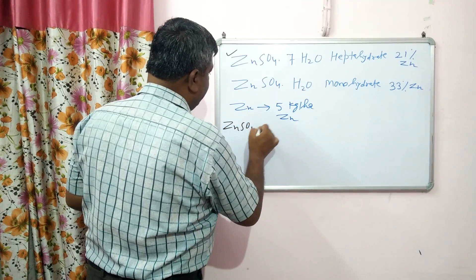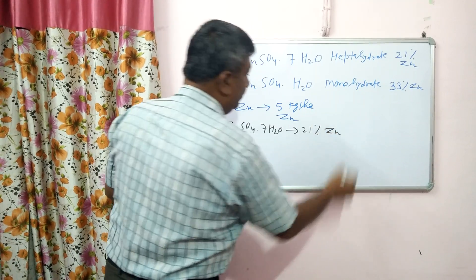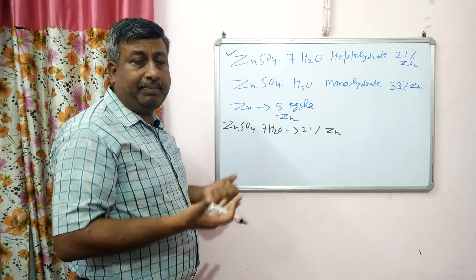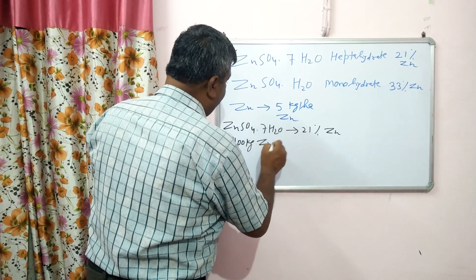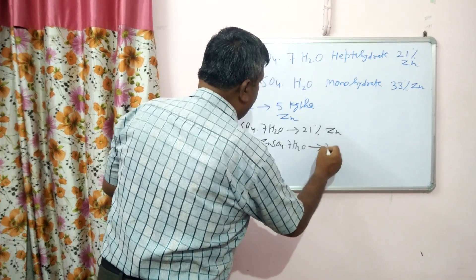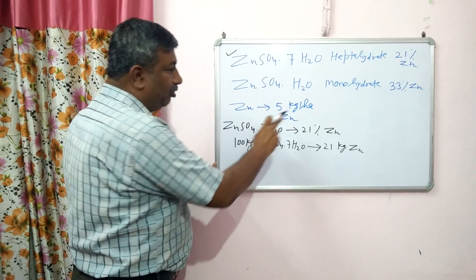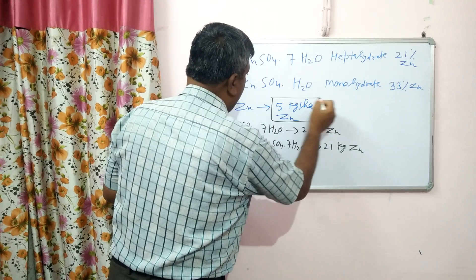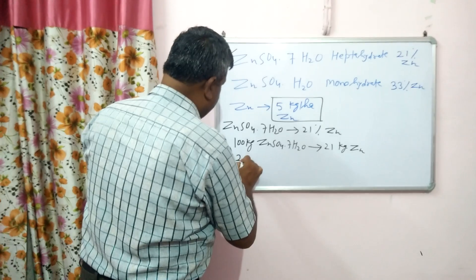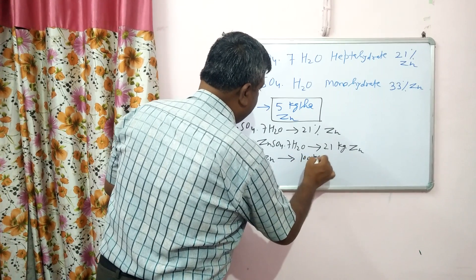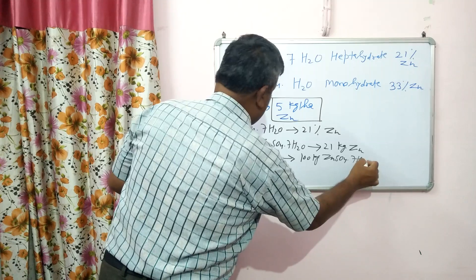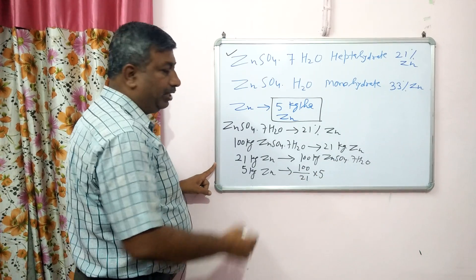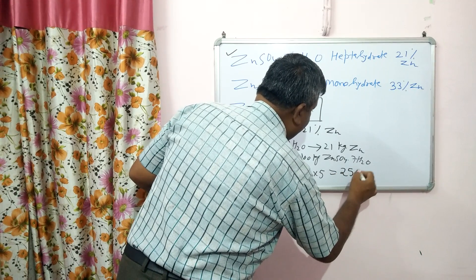In the case of heptahydrate, the zinc content is 21%. When we apply 100 kg of zinc sulphate heptahydrate, we get 21 kg zinc. Our crop requirement is 5 kg zinc. So we can calculate: 21 kg zinc is obtained from 100 kg zinc sulphate heptahydrate, therefore 5 kg zinc will be obtained from (100 ÷ 21) × 5, which is approximately 25 kg per hectare.